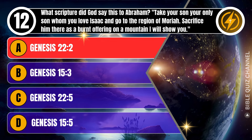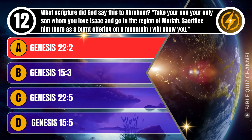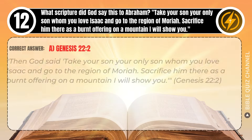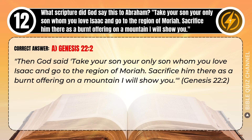Correct answer: A. Genesis, chapter 22, verse 2. Explaining the Bible — Then God said, 'Take your son, your only son, whom you love, Isaac, and go to the region of Moriah. Sacrifice him there as a burnt offering on a mountain I will show you.' Genesis, chapter 22, verse 2.